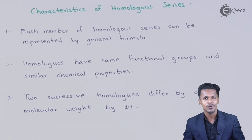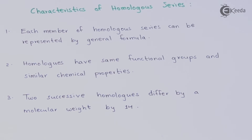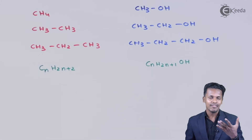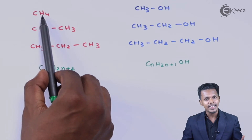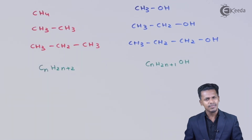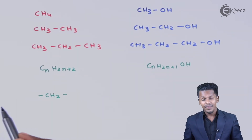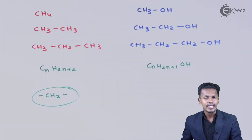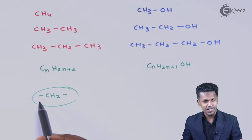The third characteristic is that two successive homologs differ in molecular weight by 14. As we know, successive members have a difference of a methylene group, CH2. The molecular formula differs by CH2, and in terms of molecular weight, this accounts for the difference between successive members.